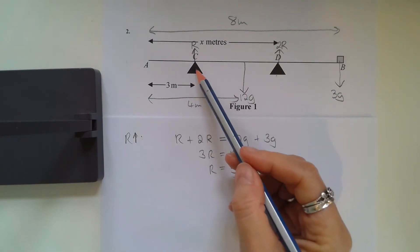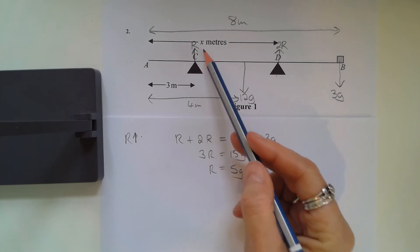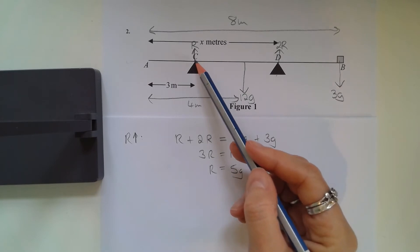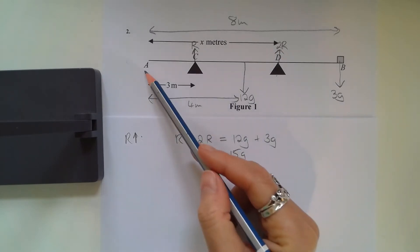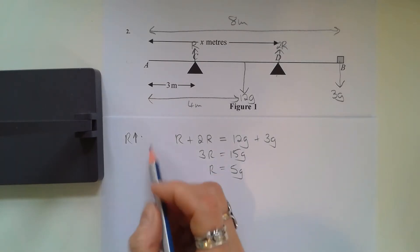So now I'm going to take moments. Quite often it would be sensible to take moments about one of these points so that I could rule out the force that's acting at that point because its distance would be zero. However, with this one I'm not going to be ruling out R by taking moments here because I still have an R here. I think the most sensible place to take moments about is probably A because I've got lots of neat distances from A.